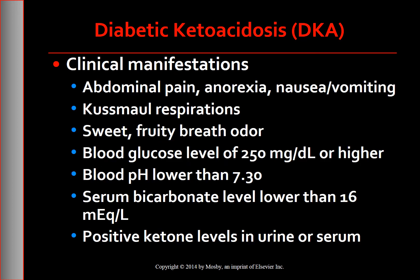Other clinical manifestations include abdominal pain, especially if there is a history of alcoholism or cocaine use, also accompanied by anorexia, nausea, and vomiting. Kussmaul respirations — rapid, deep breathing associated with dyspnea — are the body's attempt to reverse metabolic acidosis through the exhalation of excess carbon dioxide, and could result in respiratory alkalosis. Acetone is noted on the breath as a sweet, fruity odor. Lab findings include blood glucose level of 250 mg/dL or higher, arterial blood pH less than 7.3, serum bicarbonate level less than 16 mEq/L, and positive ketone levels in the urine or serum.